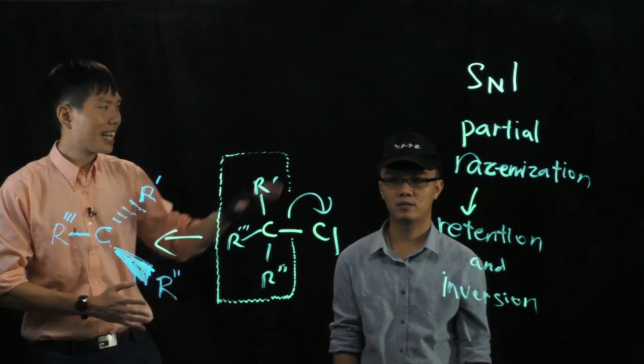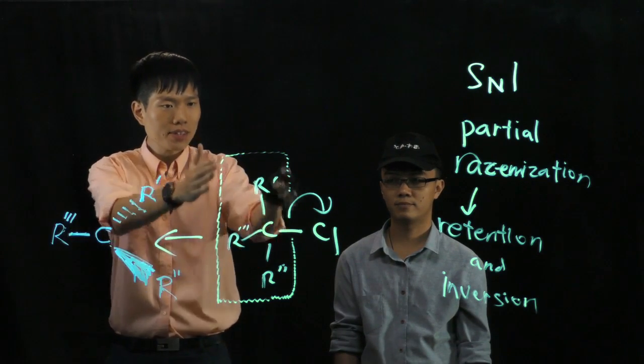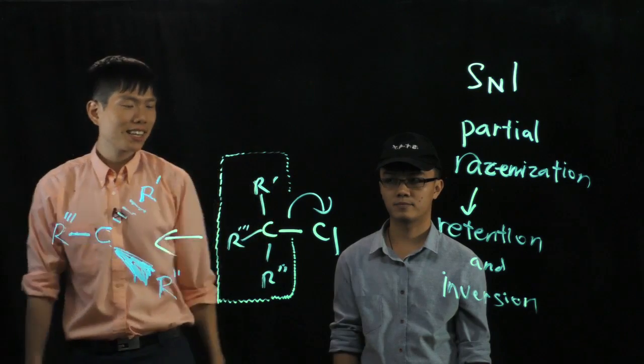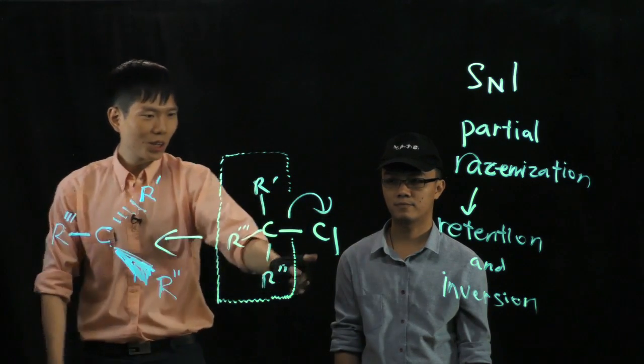So imagine that now he's wearing a cap, this cap here, that represents this fragment that's boxed up in this line. And my friend, his person, the whole body is the chloride, the leaving group.